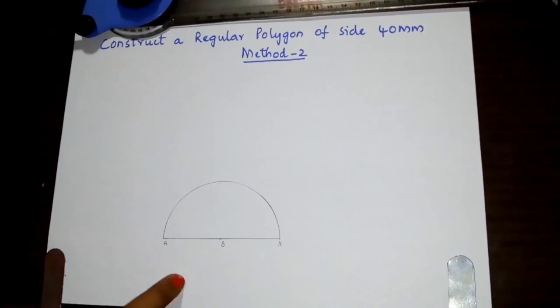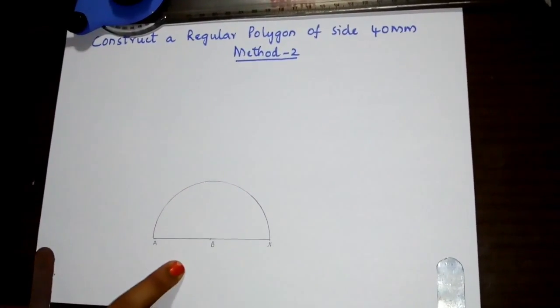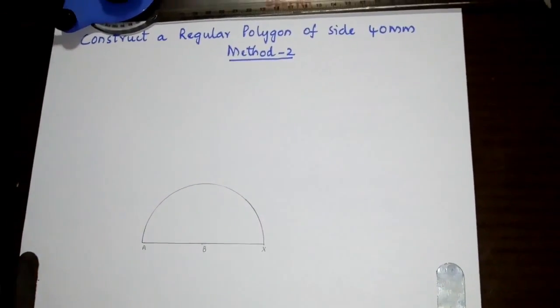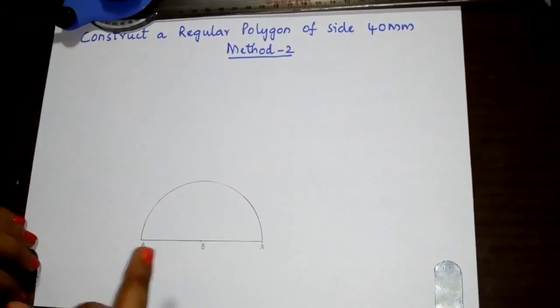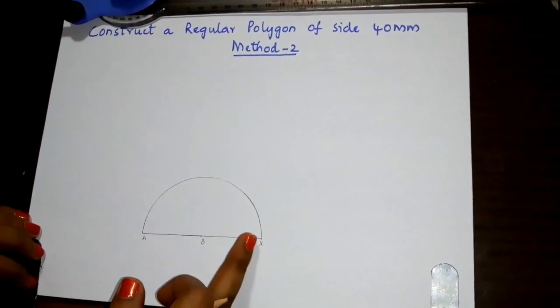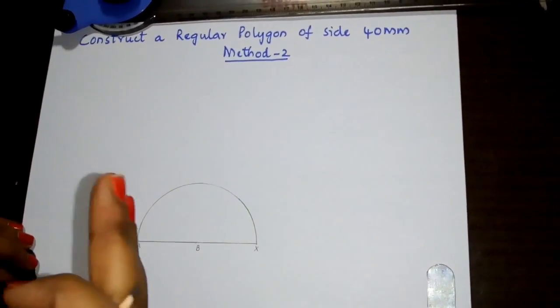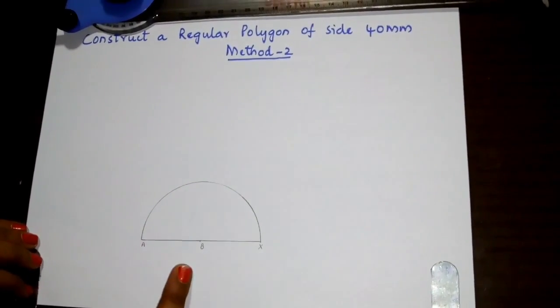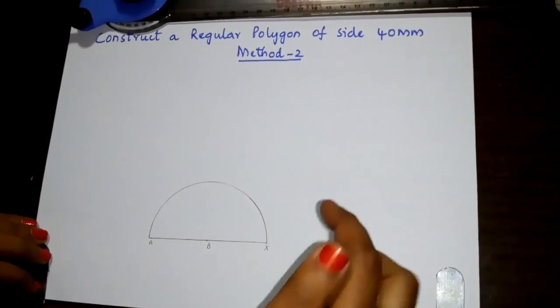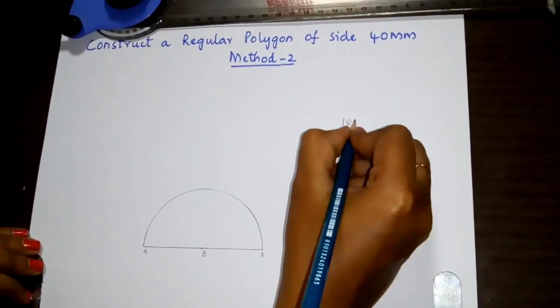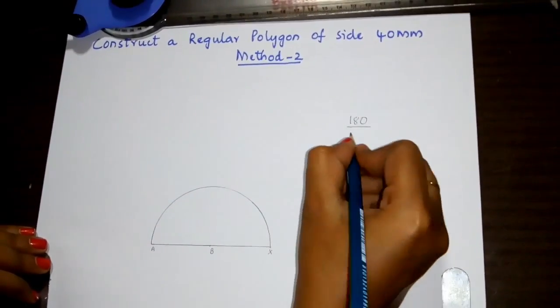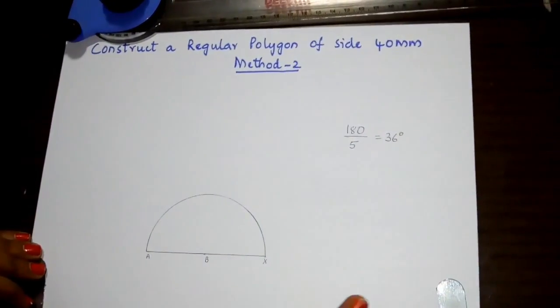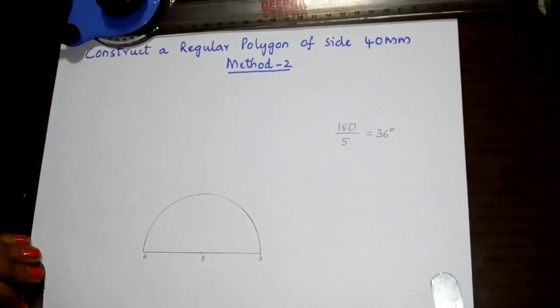We have to divide the semicircle into a number of parts depending on the sides of the polygon. For example, if I wish to draw a pentagon, I have to divide the semicircle into 5 parts. If it is a hexagon, I have to divide it into 6 parts. Now I will draw a pentagon. For that, I have to divide the semicircle, which is 180 degrees, into 5 equal parts. That is 36 degrees, so each part will be 36 degrees.